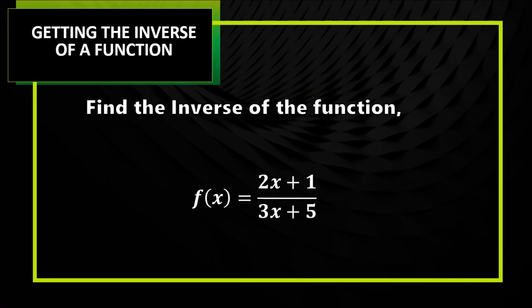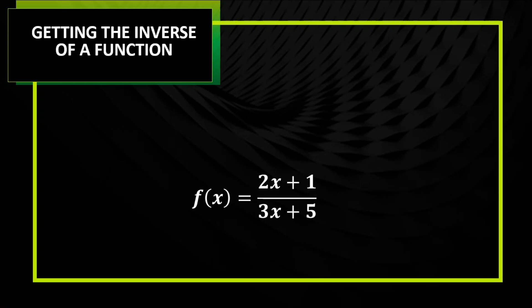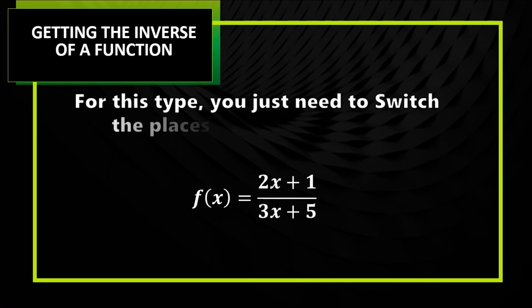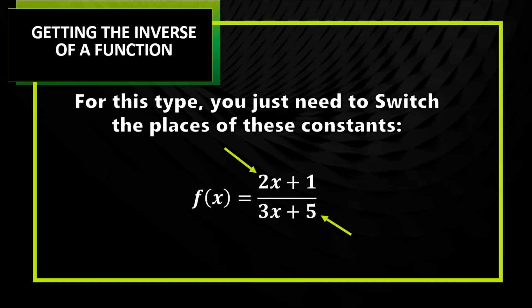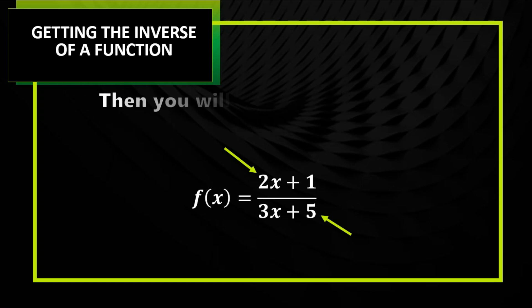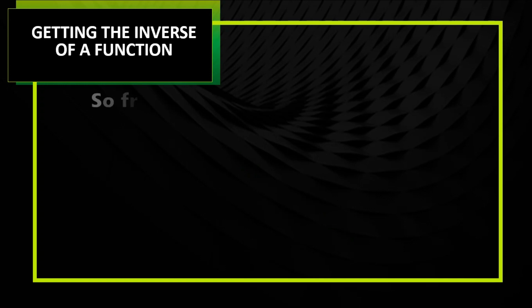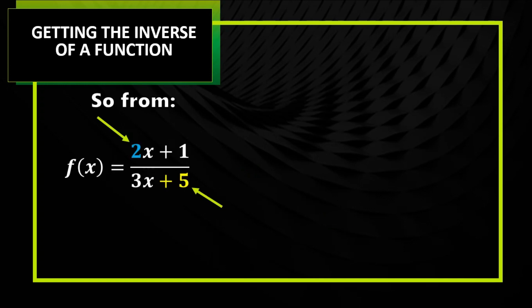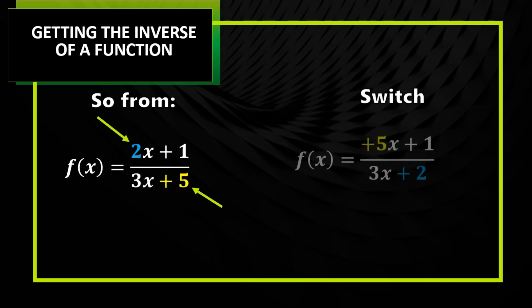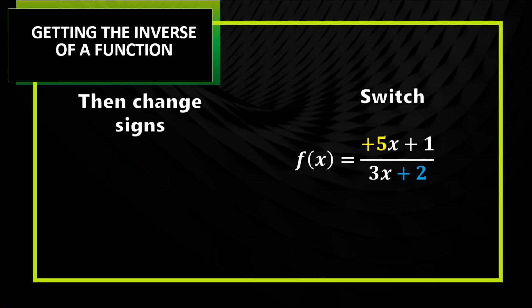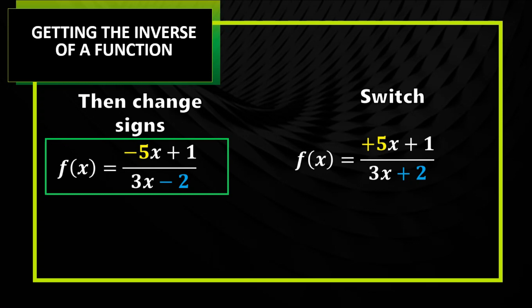Find the inverse of the rational function — dito you just need to switch the places of these numbers: yung 2 and 5. Then you will also change the signs. So from (2x plus 1) over (3x plus 5): switch — yung 5 umakyat, yung 2 bumaba — and then change the signs: from positive 5 to negative 5, from positive 2 to negative 2. And this will be the inverse of our function.